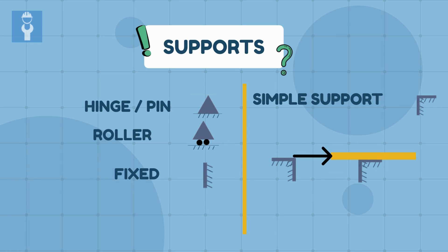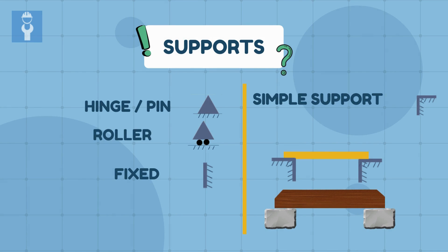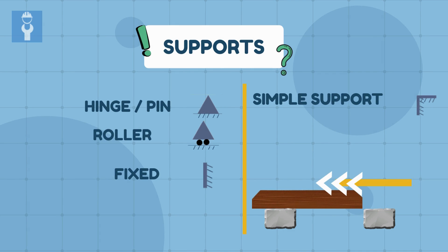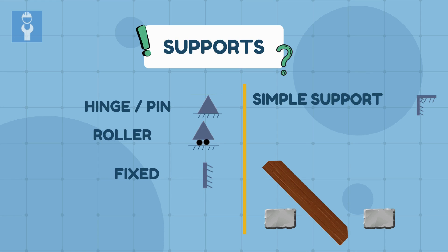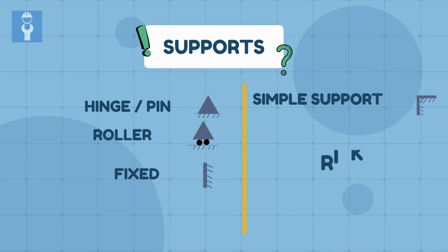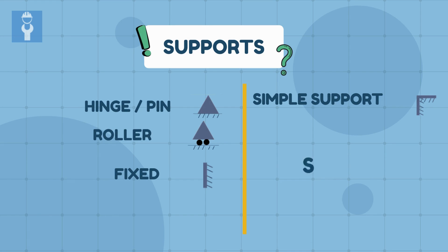An excellent example of such a support is a plank of wood resting on two blocks of stone. The plank can resist the vertical load, but cannot resist the corresponding horizontal forces. If you apply a shear force, the plank will support it, but a horizontal force will quickly get the plank to slide off the support. Simple supports are rarely used in engineering as they pose a considerable safety risk. Engineers sometimes use these supports in areas that experience frequent seismic activities.